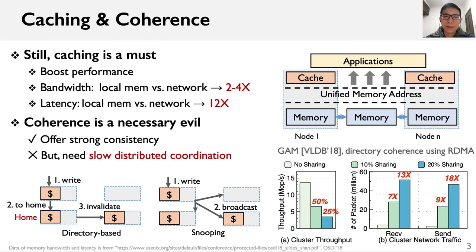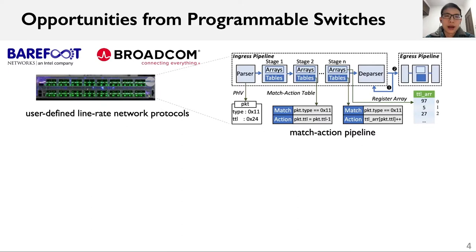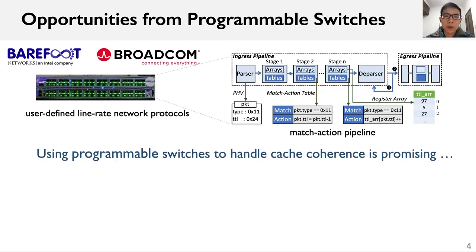We evaluate a state-of-the-art RDMA-based DSM. The figure on the bottom right shows the results. When servers start to share data, the throughput degrades significantly and the number of packets across the network increases dramatically. Emerging programmable switches allow users to define network protocols by programming match-action pipelines. In this work, we argue that using programmable switches to handle cache coherence is promising.